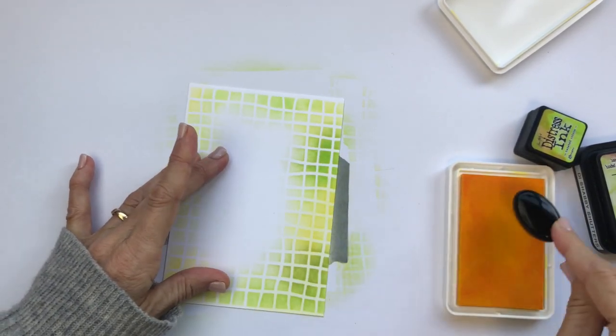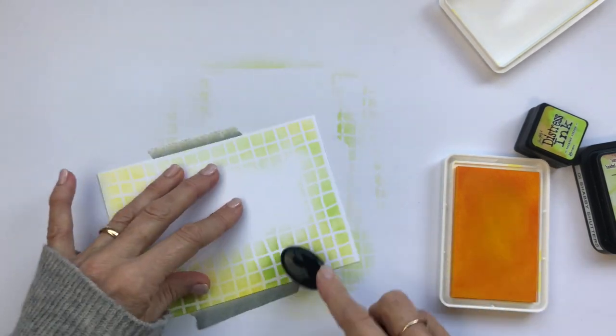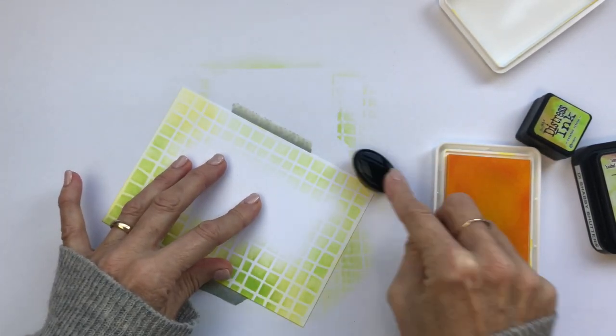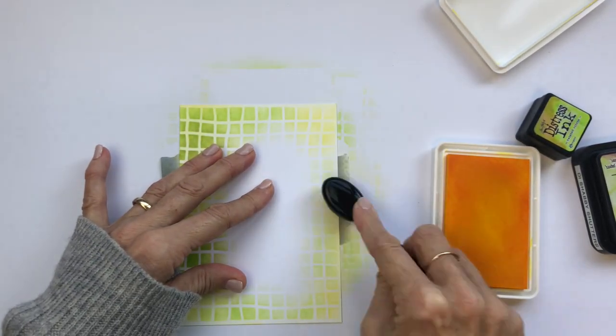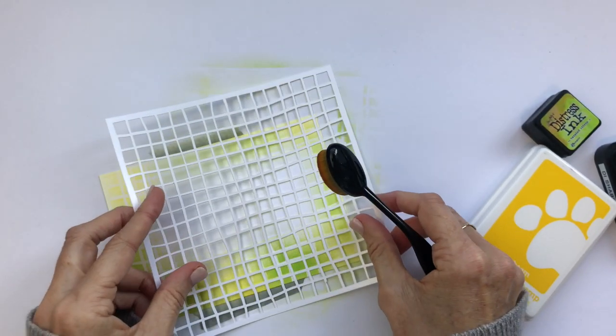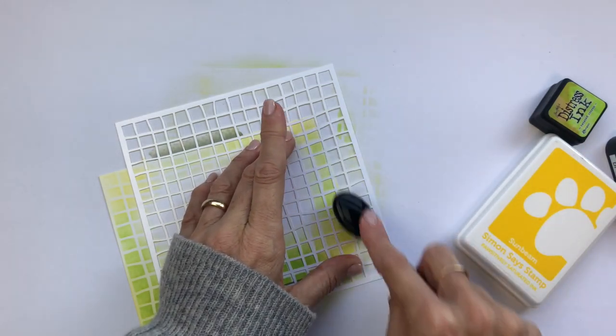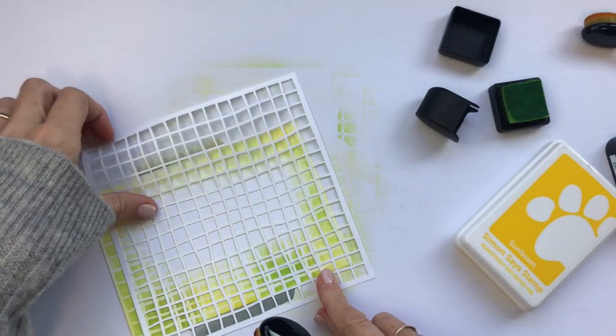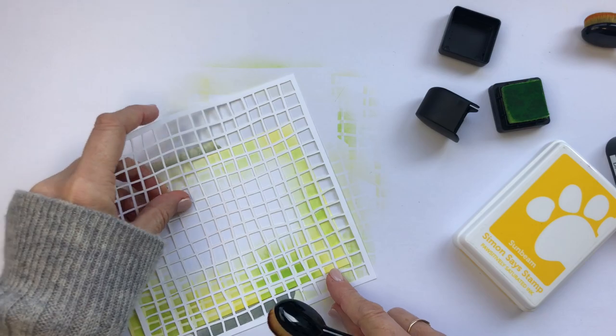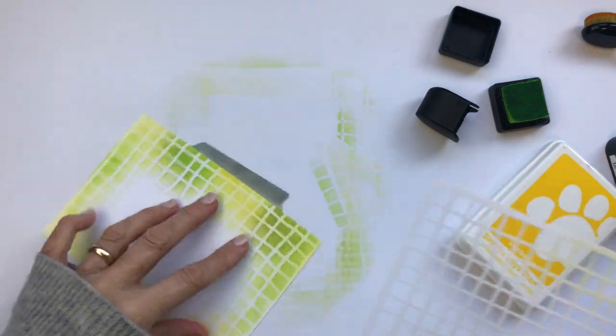If you're using a US size card you won't need to do this next step, but Australian cards are very slightly longer. So what I've done is just move the stencil into a fairly random place and colored a little bit of extra on each end just to continue that fishnet pattern right to the edge of the card.